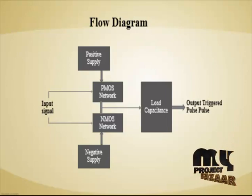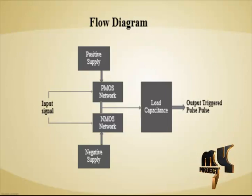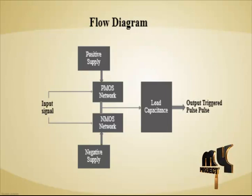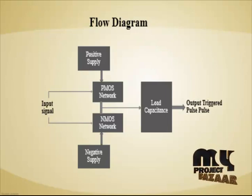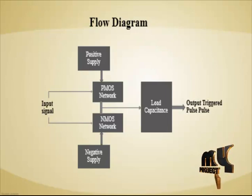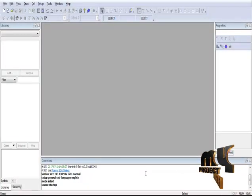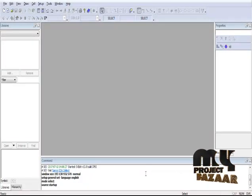The output signal of the P-MOS network is a pulse waveform. Similarly, the output signal of the N-MOS network produces a Z-shaped pulse waveform output signal. Now we are going to discuss the running procedure of our product.